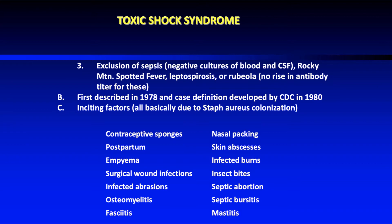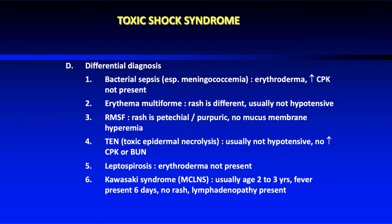Toxic shock syndrome was first described in 1978, and the case definition was developed by the CDC in 1980. Initiating factors are essentially anything that can cause a Staph aureus infection leading to toxin release. It is important to be aware of the differential diagnosis.